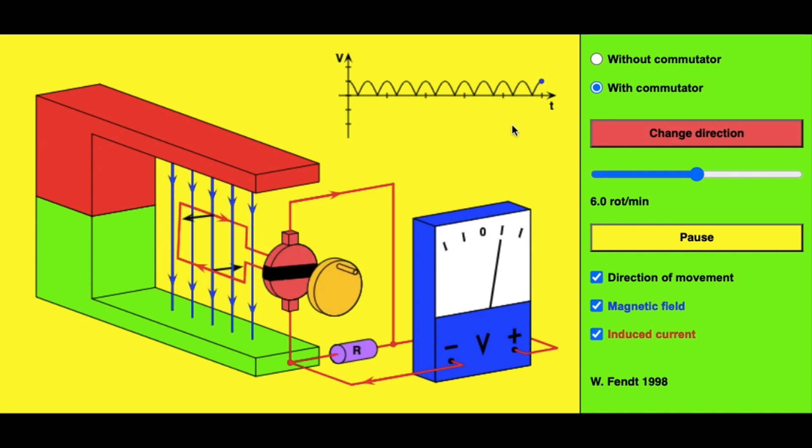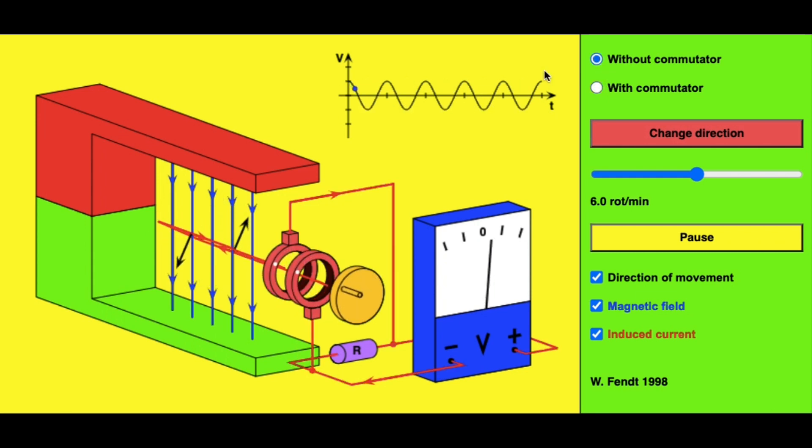We can then replace the split ring commutator with a slip ring that allows the alternating current in the internal circuit to be converted into alternating current in the external circuit. It does that by maintaining contact with a certain side of that coil and allowing the carbon brushes to maintain that contact as it rotates.